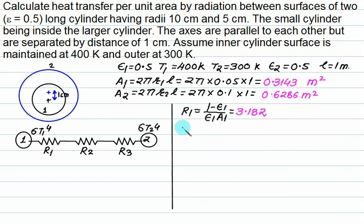Now we will calculate the space resistance R2: 1 upon A1 F12. For body number 1 to 2, F12 is 1 because if you are at body number 1, we can completely view the body number 2. So shape factor equals to 1. F12 equals to 1, A1 equal to this, we get. This answer is 3.182.